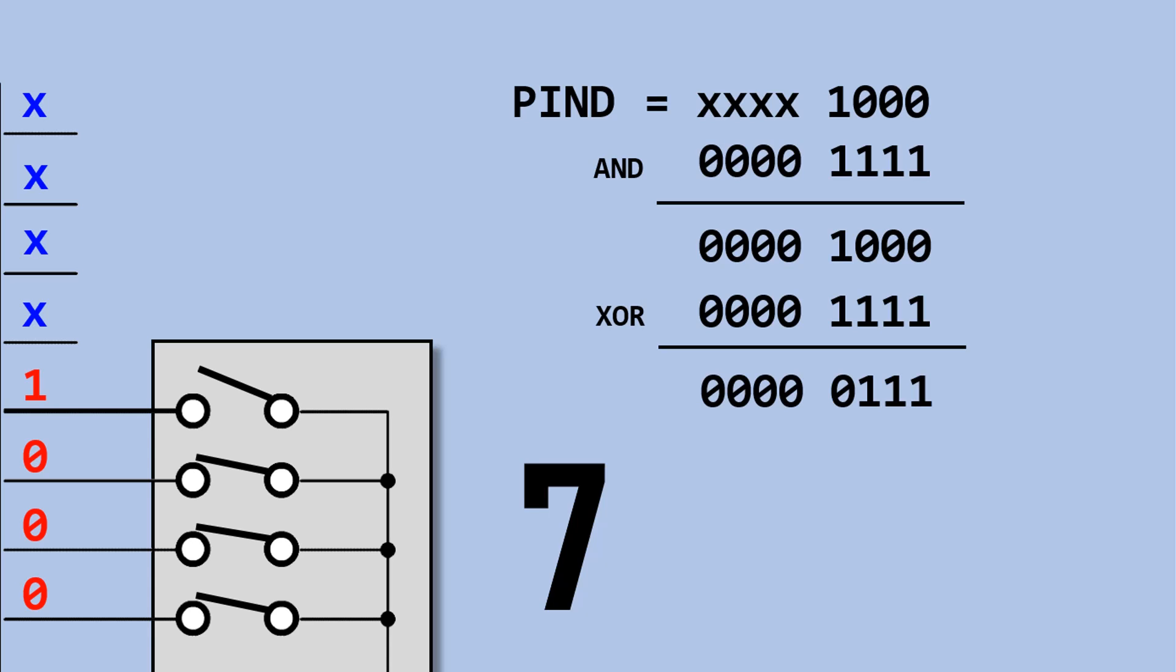This is the result. The purpose is to invert these bits. The result is 7, same as the dial number on the BCD switch.